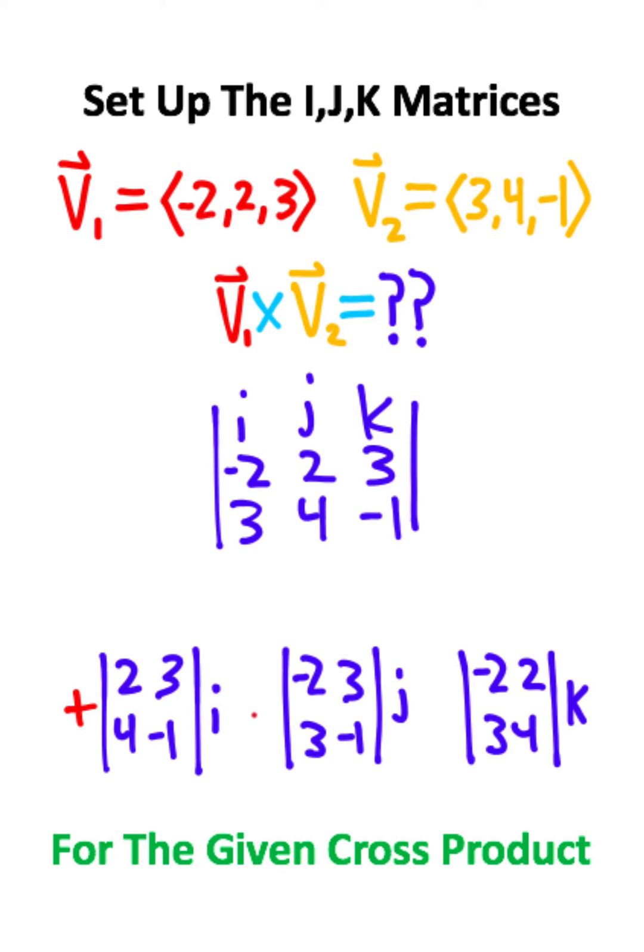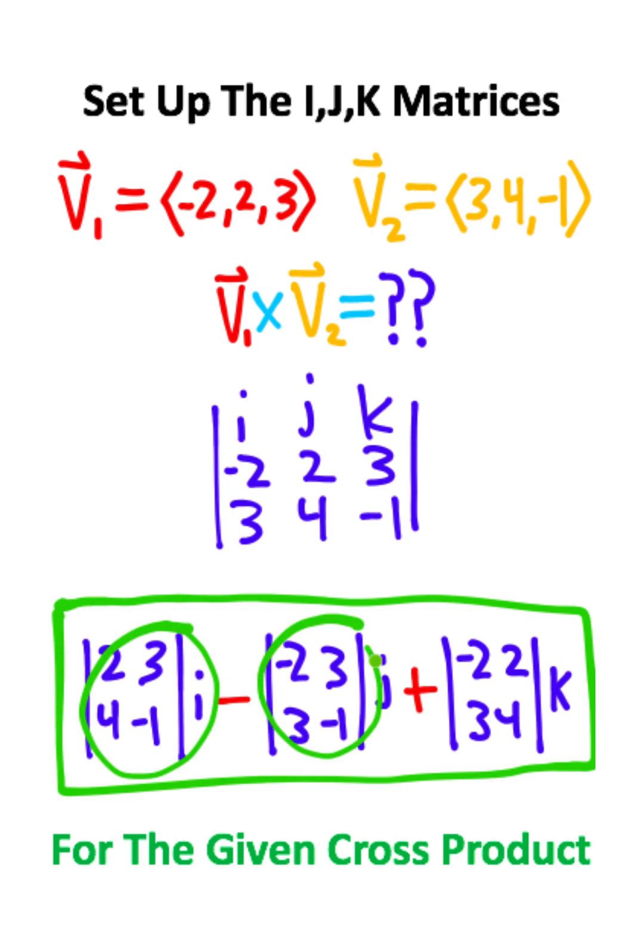The last step is to start with a positive sign and then alternate signs between each matrix. And if you found the determinant of each matrix by basically cross-multiplying and subtracting each result, that would give you the new vector that comes from the cross product of vectors 1 and 2.